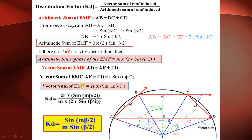The vector sum of EMF is 2R·sin(mβ/2) and the arithmetic sum is m times 2R·sin(β/2). Applying the definition of distribution factor — vector sum divided by arithmetic sum — the 2R cancels, giving the distribution factor Kd equals sin(mβ/2) divided by m·sin(β/2). This is the derivation of the distribution factor.